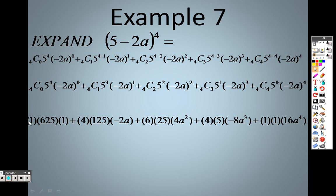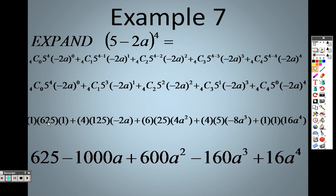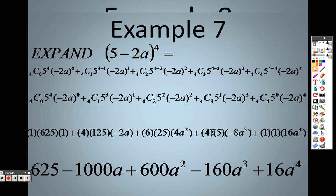So you combine all your like terms to get 1 times 625 times 1 is 625, 4 times 125 times negative 2a is negative 1000a, 6 times 4 times 25 is 600a squared, 4 times 5 times negative 8 is negative 160a cubed, 1 times 1 times 16 is 16, and there's your answer.